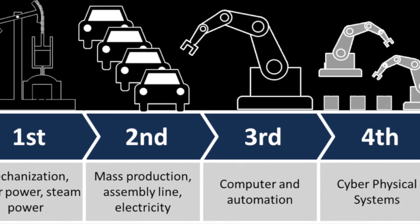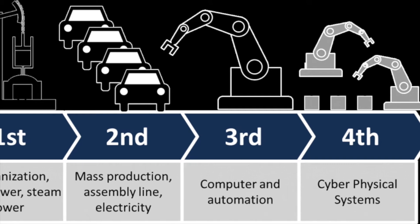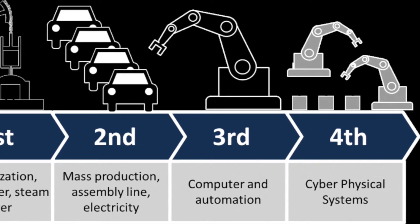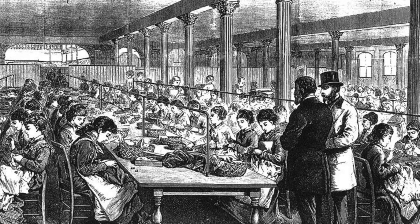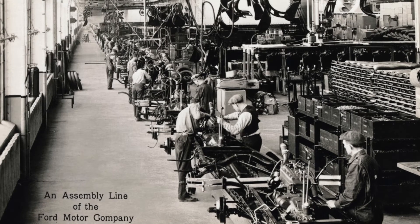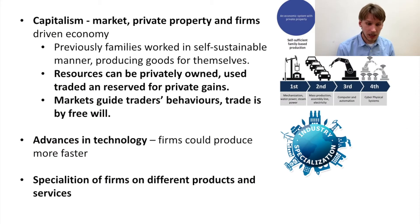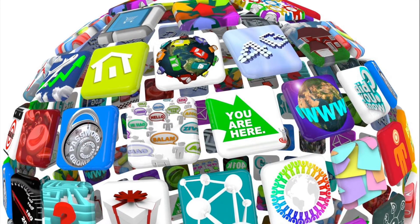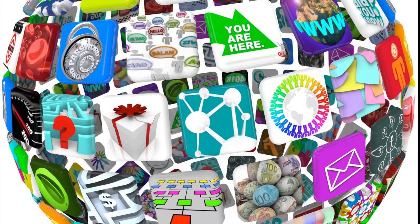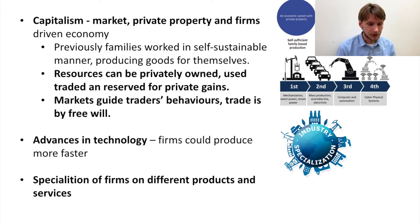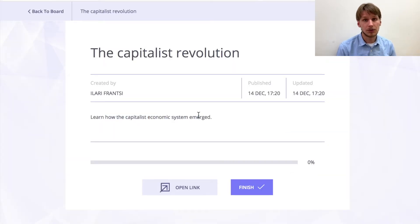Many products could now be produced at a much higher rate with much lower costs, because technology allowed factories to be far more effective in their production with fewer workers needed. When supply became greater, this also encouraged more specialization — you had to specialize in something in order to gain a market share. Now that you know the very basics of the capitalist system and how it emerged, you can read two chapters in the book.